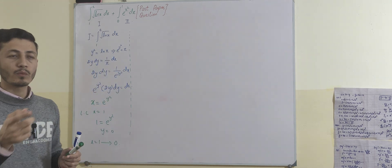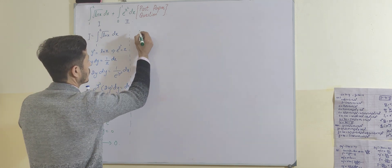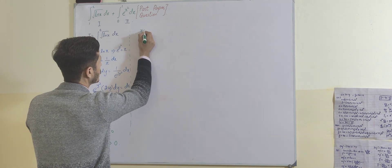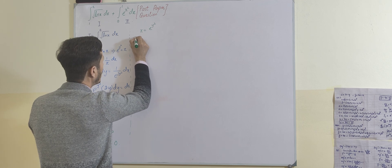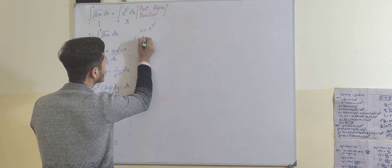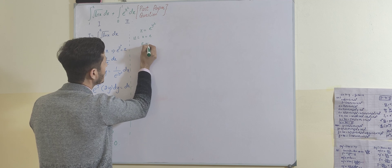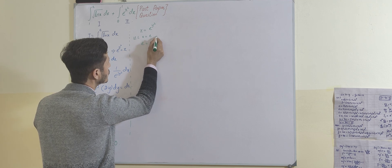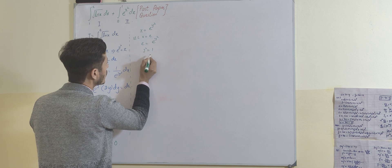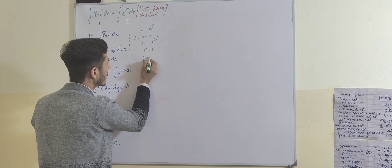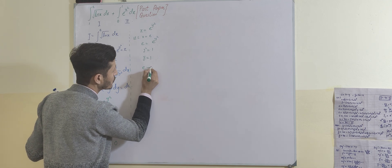Now let's see what happens with the upper limit. Since x = e^(y²), the upper limit is x = e. Placing x = e gives e = e^(y²), which means y² = 1, so y = 1. Therefore the upper limit e transforms to 1.